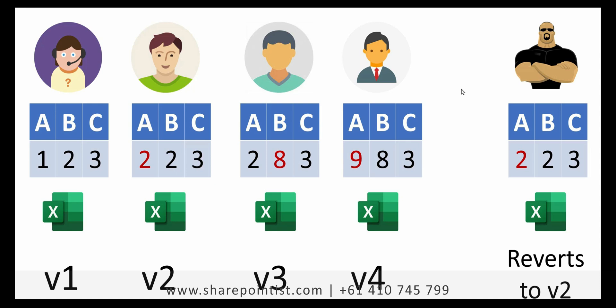The manager can review each version and select whichever feels most appropriate, then restore it. In this diagram, you can see the manager has restored it back to version 2, making the Excel file look exactly how it was when the second user updated it. Let's have a quick look at it practically and see how it works on the environment.